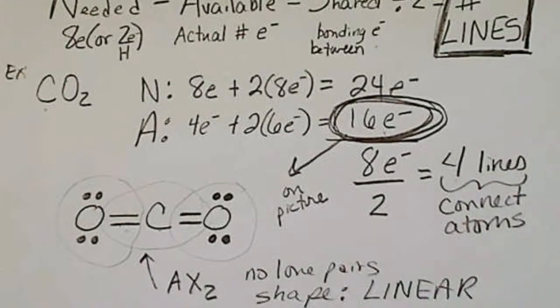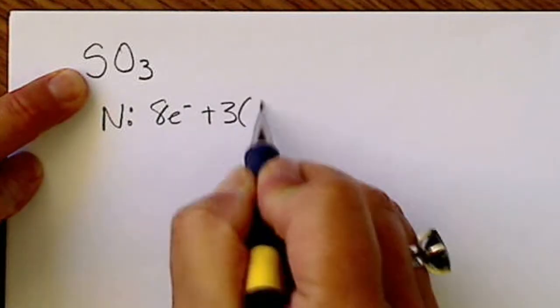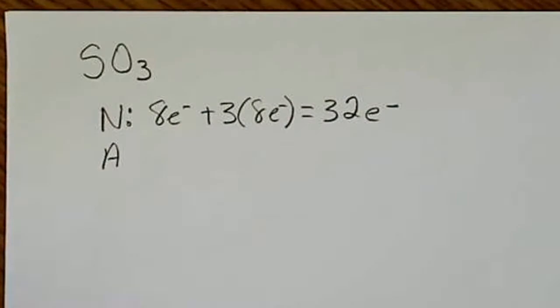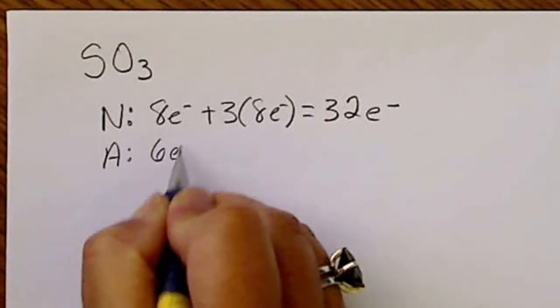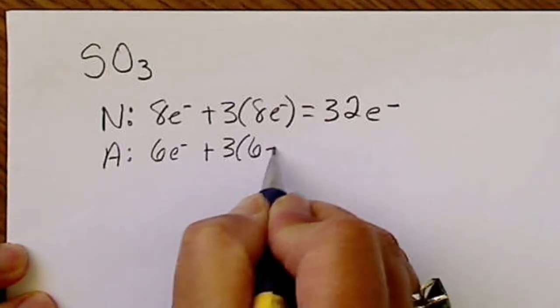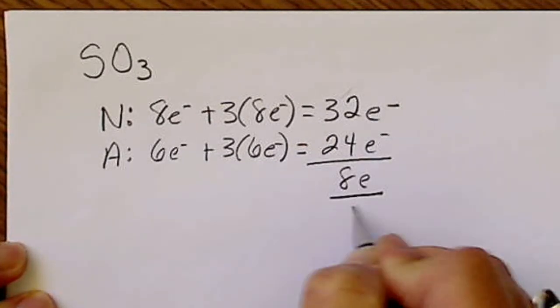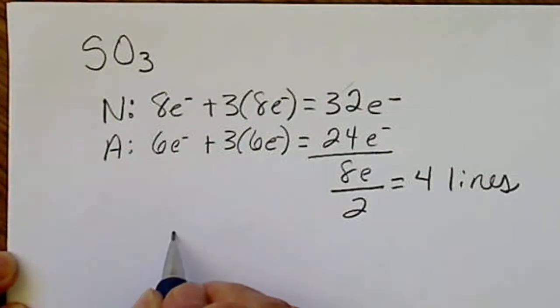Now let's do SO₃. For the needed: sulfur needs eight electrons plus three times eight for the oxygens, totaling 32 electrons. For the available: sulfur and oxygen are in the same column, each with six valence electrons, so that's 24 electrons total. Subtracting gives eight electrons, and dividing by two gives four lines.